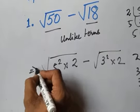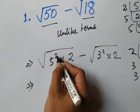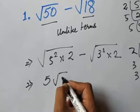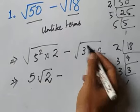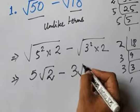So you can see 5 as a square, so it will come outside the root. So it is 5 root 2 minus 3 comes outside the root, it is 3 root 2.